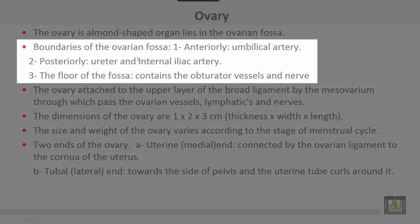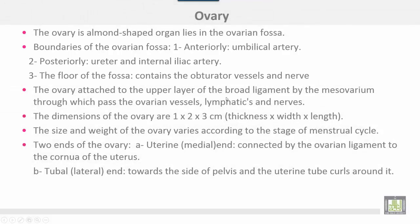The boundaries of the ovarian fossa: anteriorly the umbilical artery, posteriorly the ureter and internal iliac artery. The floor of the ovarian fossa contains obturator vessels and nerves. The ovary attaches to the upper layer of the broad ligament by the mesovarium, through which pass ovarian vessels, lymphatics, and nerves. Dimensions of the ovary: 1 cm thickness, 2 cm width, 3 cm length. The size and weight of the ovary vary according to the stage of the menstrual cycle.